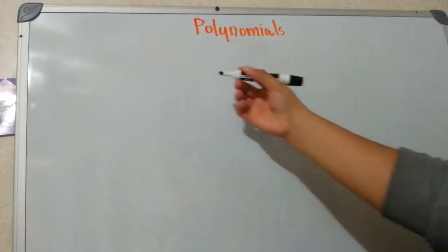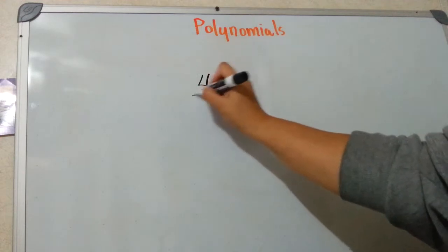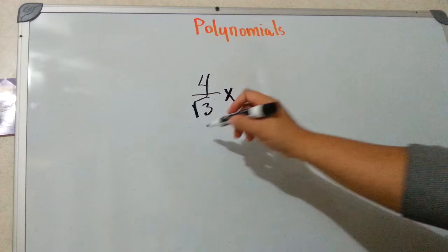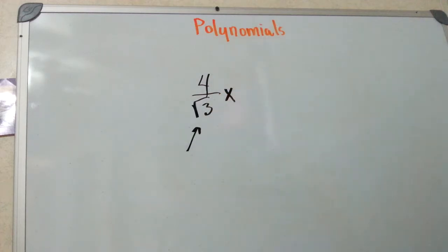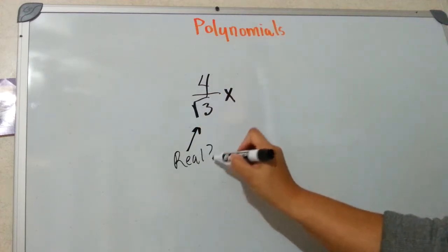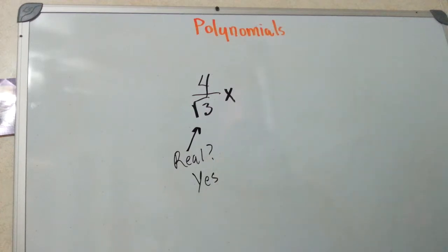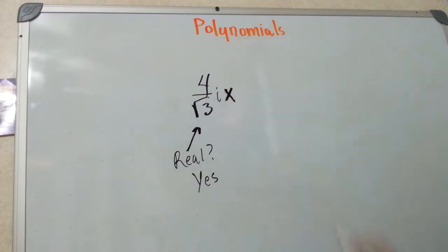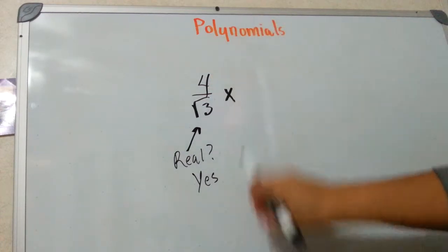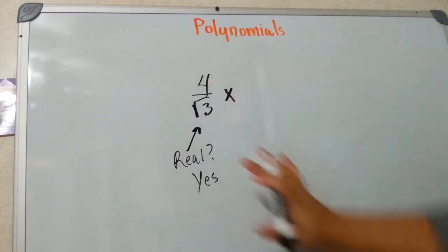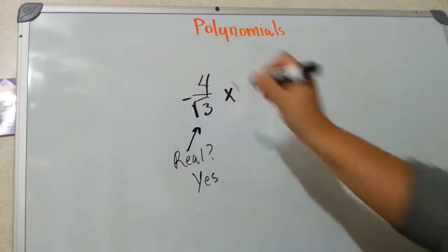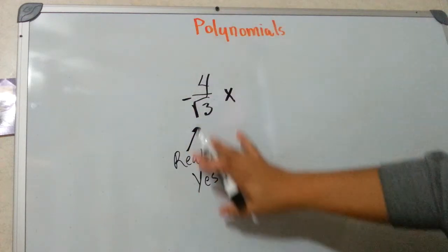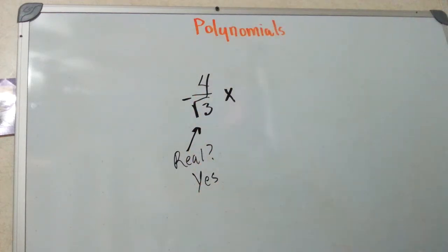So what is and what is not a polynomial? It's a very simple check. Look at the coefficient — is the coefficient real? As long as you don't have an i, it's real. The minute you have an i, it's not real, it's not a polynomial. As long as your coefficient is real, it doesn't matter what it looks like. It can be positive, negative, can have radicals — the whole thing can be under a radical. As long as you don't have an i, it's real and we're good.